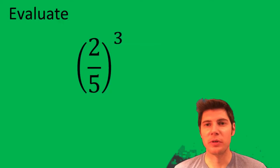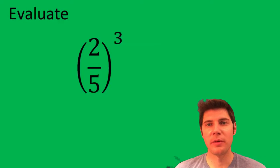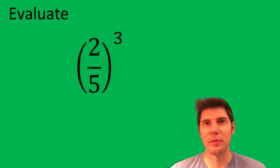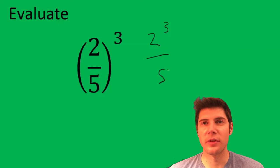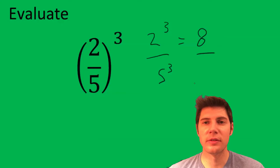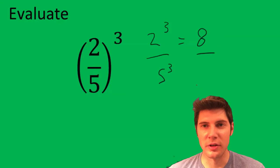Hey guys, welcome to this exponent problem. Anytime you have a fraction with an exponent set up like this, you can just split it for each one. It's going to be 2 to the 3 over 5 to the 3. And that's equal to 8 over 125.